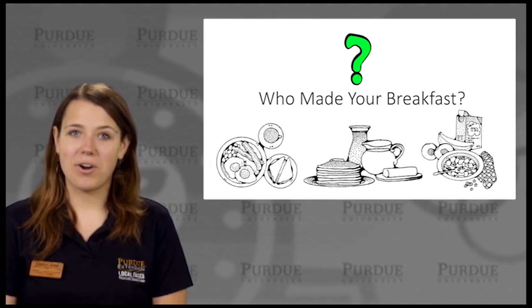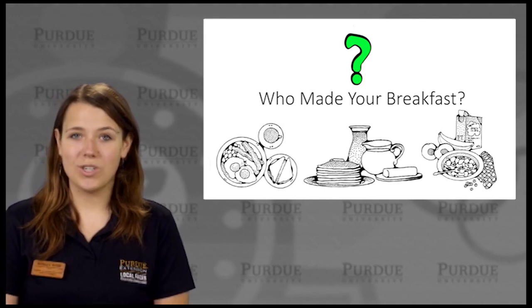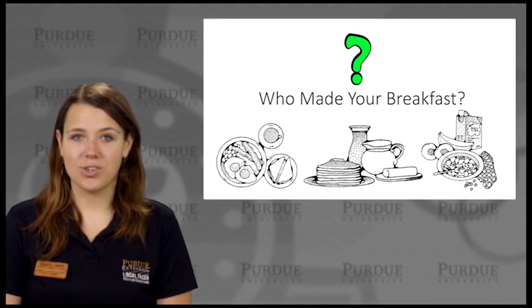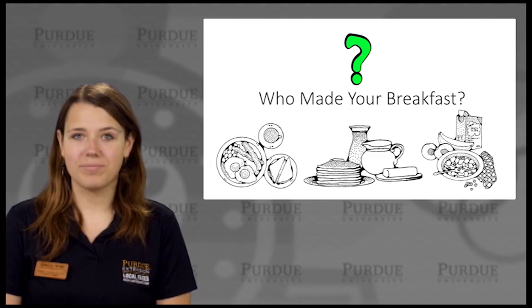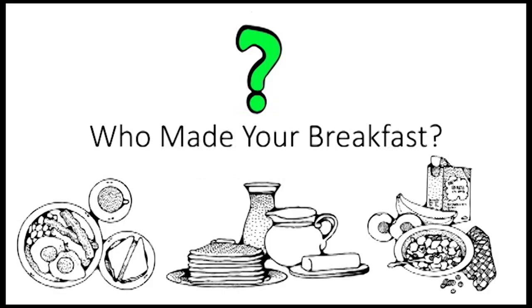Let's think about our food from a natural resource perspective. Natural resources are materials that are found in nature and can be used for economic gain. So if we use all of them, we can run out. Water and land are examples of natural resources.